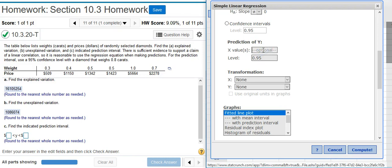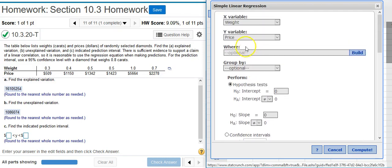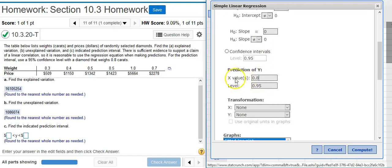In this field for X value, I'm going to stick in the 0.8 carats. Because the weight of the diamond, notice, is the X variable. So, that's going to be my X value for my prediction. The prediction level is a default 95%. That's what we were asked to actually calculate our prediction interval for. So, we have everything we need. I press compute.